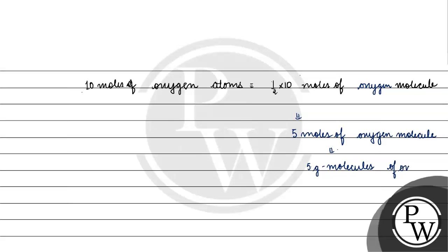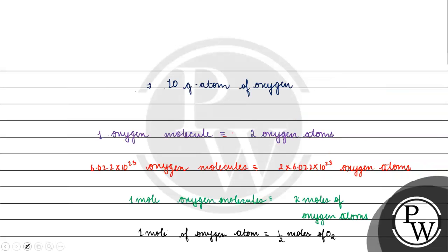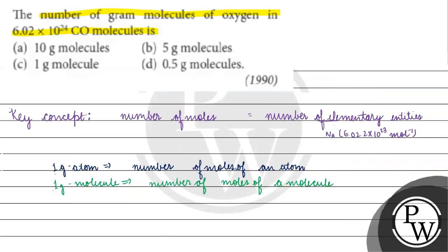These 5 moles of oxygen molecules are basically present in 10 gram atoms of oxygen. So the number of gram molecules of oxygen in 6.02 × 10²¹ CO molecules is 5 gram molecules. The correct answer is option B. I hope you understood well. Thank you and all the best.